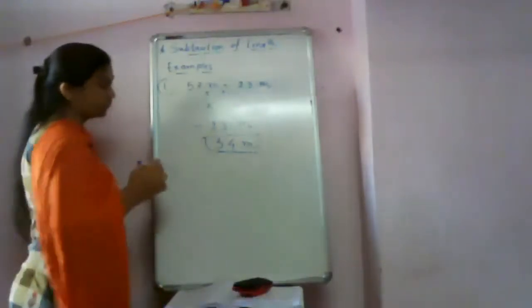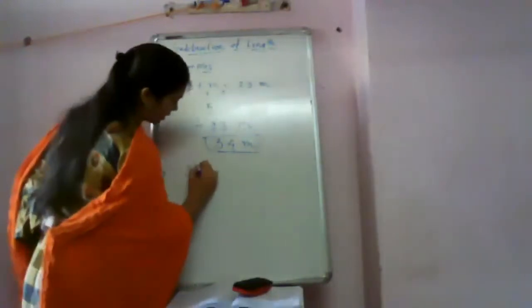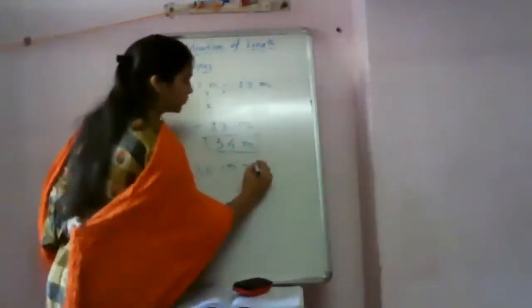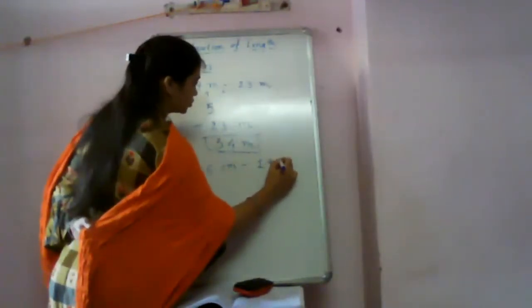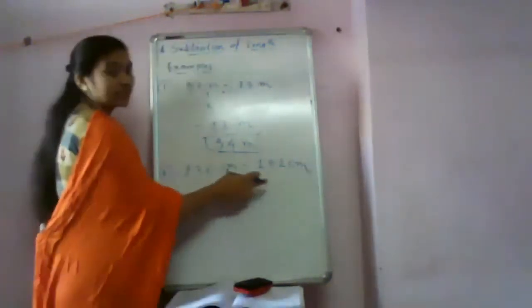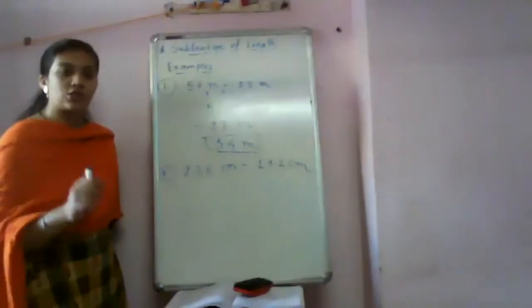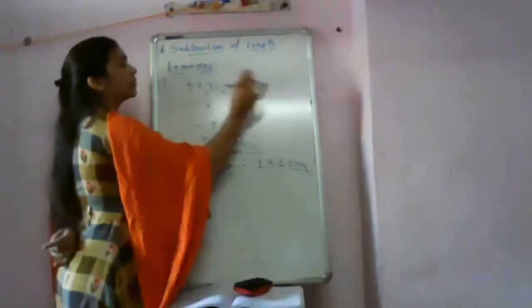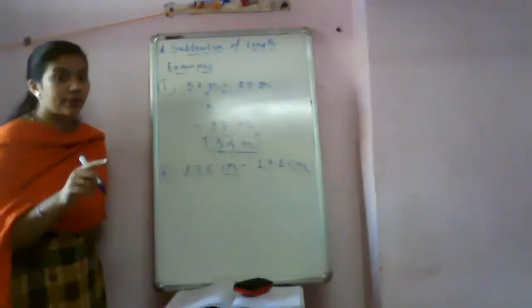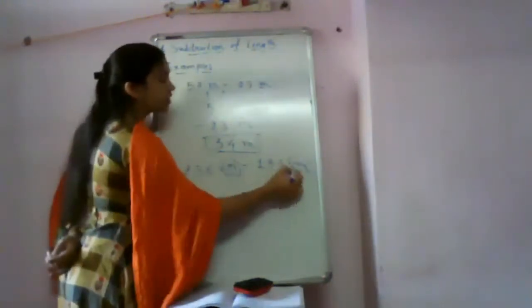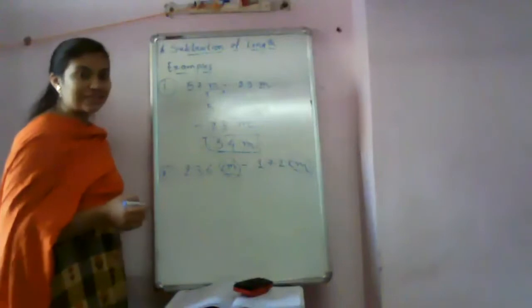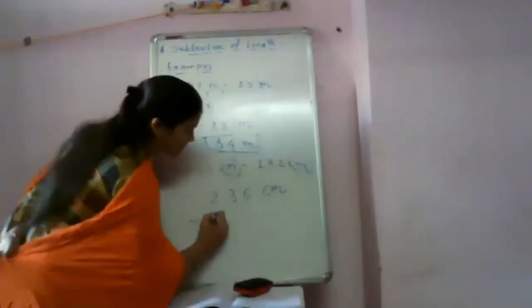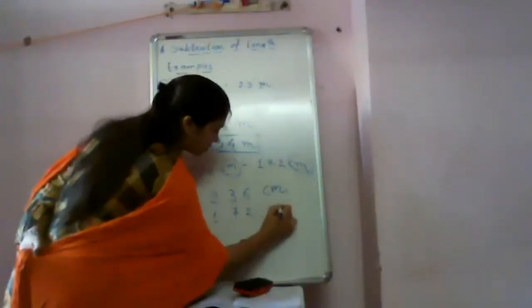Next example: 236 centimeters minus 172 centimeters. Both have the same units. First of all, whenever you are doing addition or subtraction, you must check the units. Since the units are the same, you can do the subtraction easily. So, 236 centimeters minus 172 centimeters.